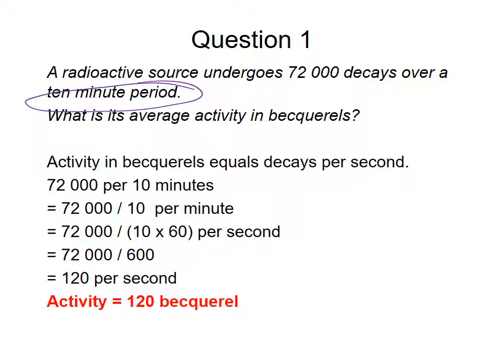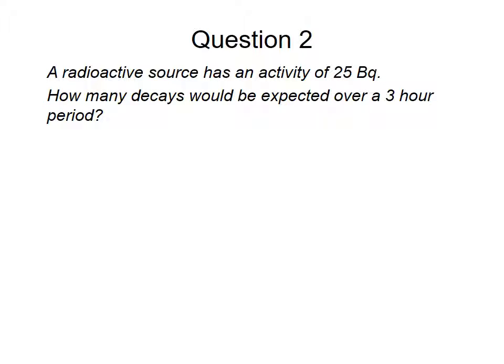And that's going to give you 120 Becquerels. And that's the units, of course, will decay. Question two. A radioactive source has an activity of 25 Becquerels. How many decays would you expect over a three-hour period? So again, pause the video now and see what you end up with.